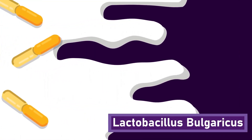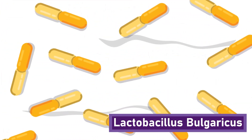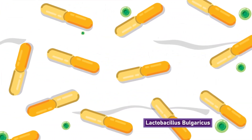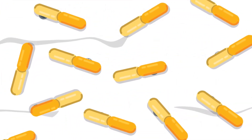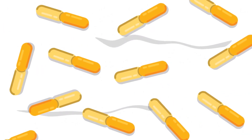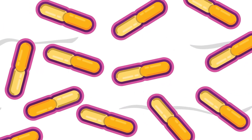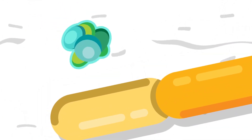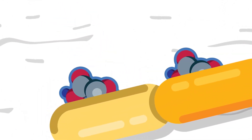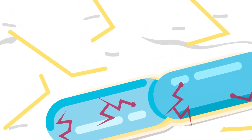Some bacteria, such as Lactobacillus bulgaricus, cause milk to turn sour and form yogurt. The bacteria feed on sugar, which is then converted into lactic acid and energy. This energy is also equivalent to 2-ATP. The bacteria turn glucose into 2-lactic acid and energy of 2-ATP.